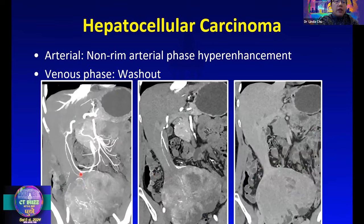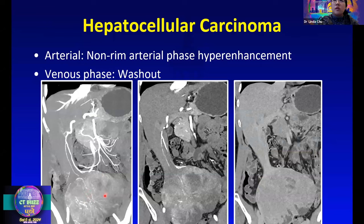Here's another example of an HCC. On the arterial phase, it has very heterogeneous arterial phase hyper-enhancement. The MIP image on the left helps bring out the very disordered tumor neovascularity — you can appreciate very irregular feeding vessels in this mass, which is also a sign of malignancy. On the venous phase images, there is washout, checking all the boxes for a hepatocellular carcinoma.